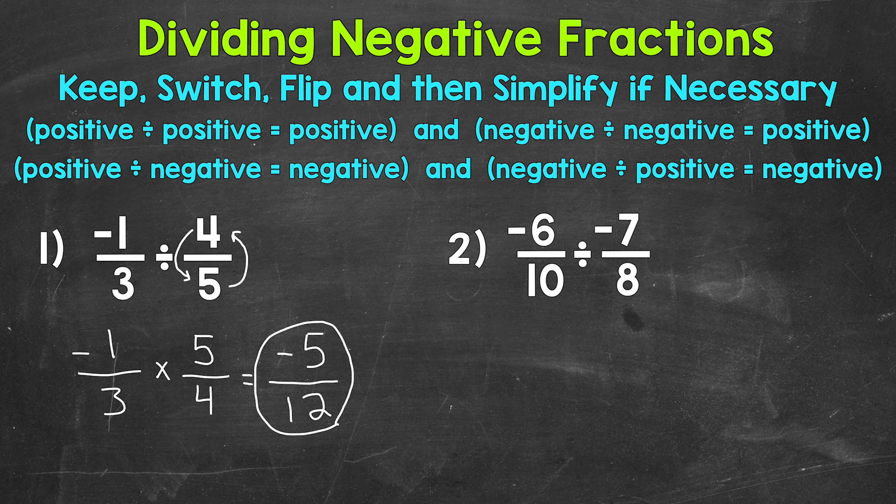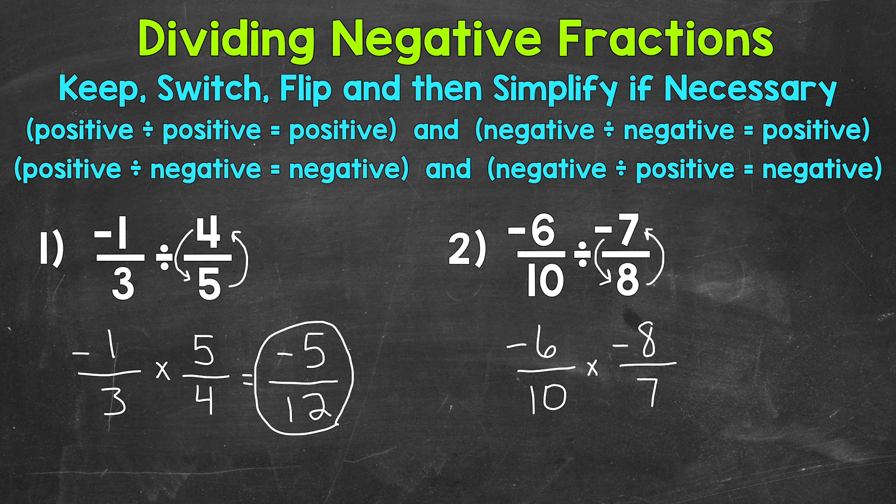Always keep our first fraction here. So negative six tenths, switch to multiplication, and then flip our second fraction. So we have negative eight over seven. So I kept that negative sign with the numerator. Remember, there are three different ways to write negative fractions. We can have the negative sign with the numerator, in front of the fraction, or with the denominator. It's okay to leave that negative sign with the numerator when we flip that fraction.